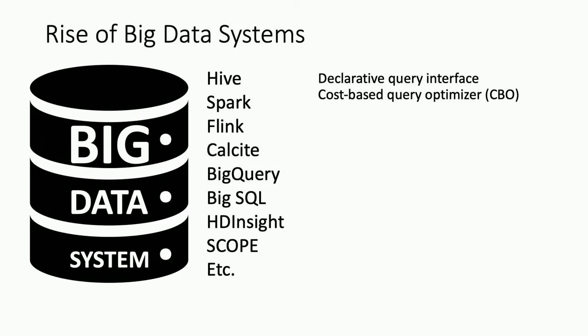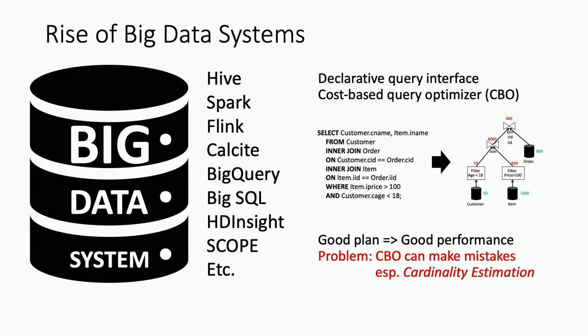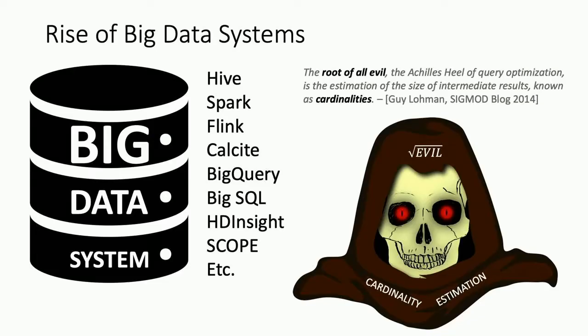We are witnessing a rise of big data systems — Hive, Spark, Flink, Calcite, and many industry offerings. There's a trend toward declarative systems with cost-based optimizers that, given a user query, automatically figure out the best physical execution plan by estimating cardinalities, estimating cost, and picking the cheapest plan. A good plan leads to good performance. But cost-based optimizers can make all sorts of mistakes, and the most notorious is cardinality estimation — the root of all evils, the Achilles heel of optimization.